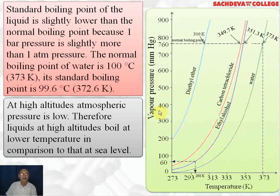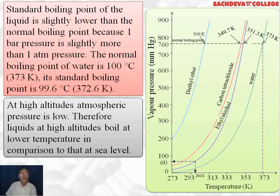The normal boiling point of water is 100°C (373 K) and standard boiling point is 99.6°C. The graph shows vapor pressure versus temperature for various liquids. Diethyl ether is highly volatile with a boiling point of 308 K. Carbon tetrachloride's vapor pressure becomes equal to atmospheric pressure at 349.7 K, ethyl alcohol at 351.3 K. Water has the highest boiling point — at 373 K its vapor pressure becomes equal to atmospheric pressure. This graph shows that the force of attraction between water molecules is maximum, which is why its boiling point is highest.